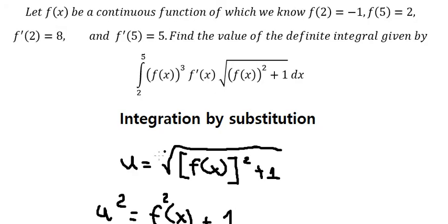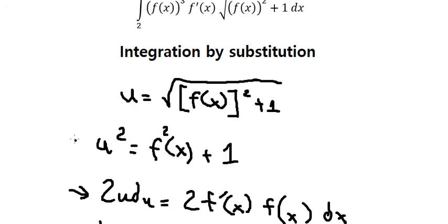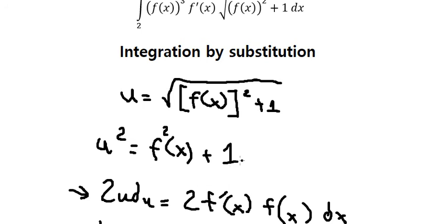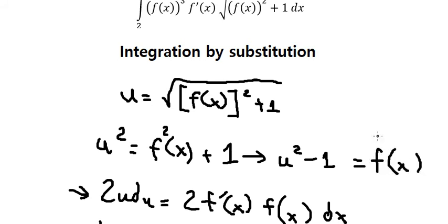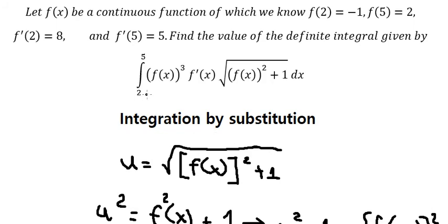If we look carefully, we have f(x) to the power of three, and we have another f(x) here, so we can use this. We move the 1 to the left side, and we have u² minus 1 equal to f(x) to the power of two.